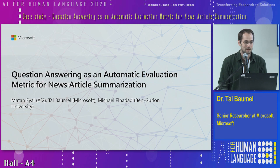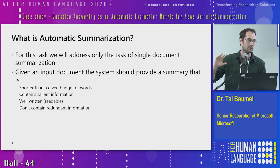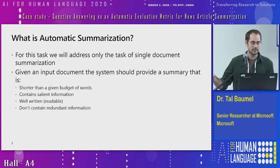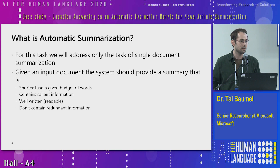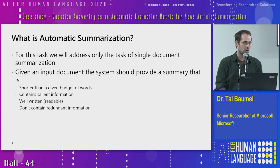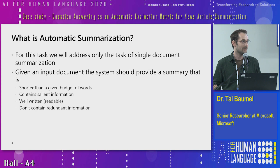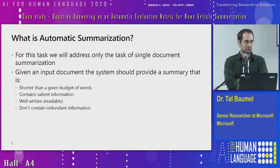First, automatic summarization — a bit of an intro. In this task, we will only address a specific flavor of automatic summarization, which is single document summarization in the news article domain. A summarization is essentially a text which is shorter than some given budget of words. It should contain all the salient information from the original text, be well-written — which is hard to define — and not contain redundant information.